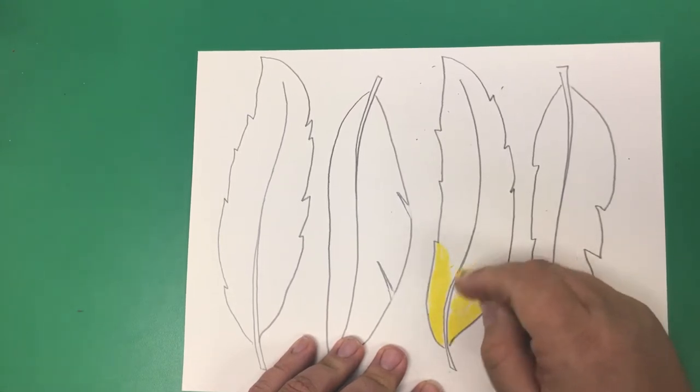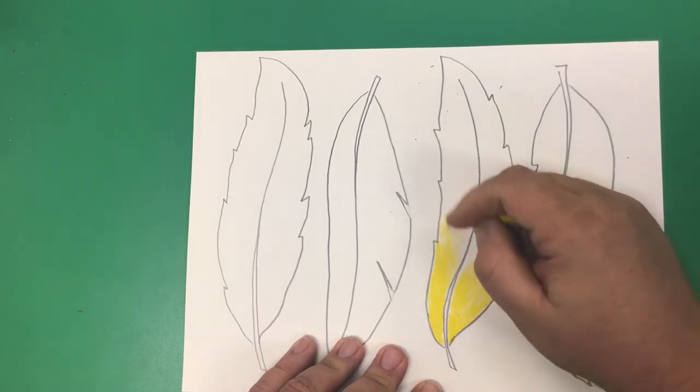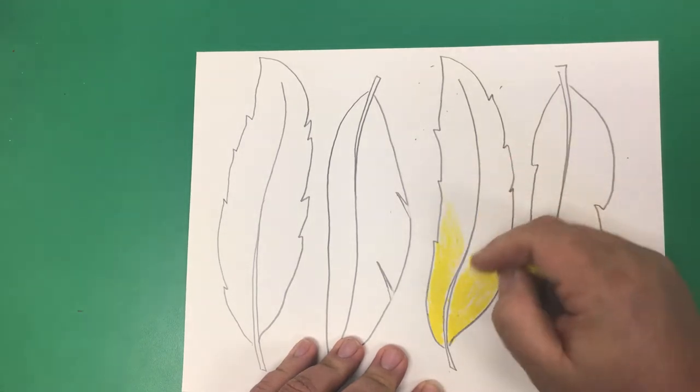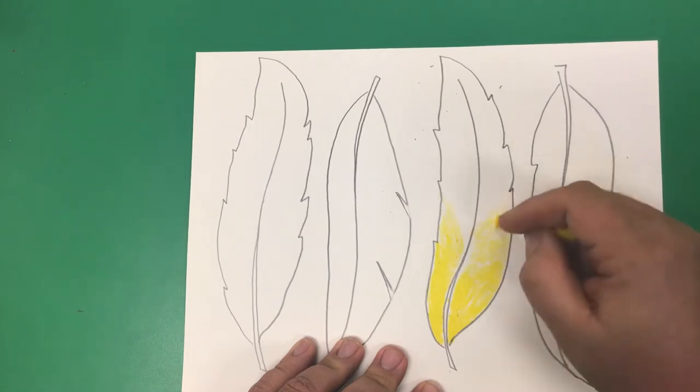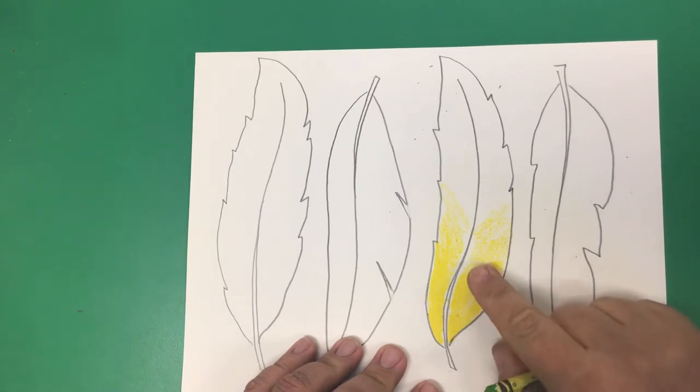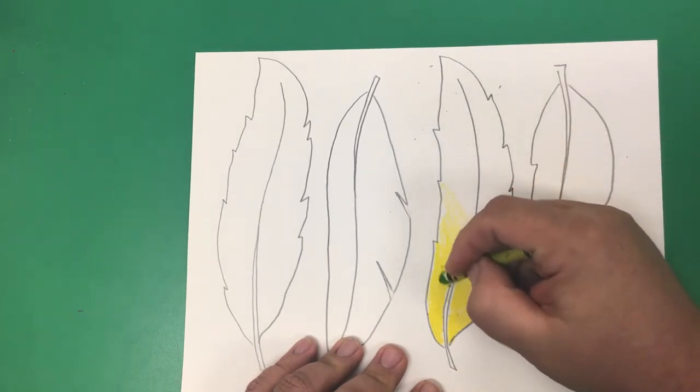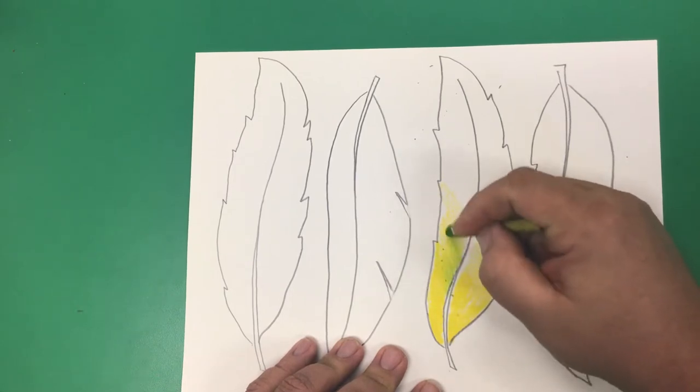Now, the thing with crayons are they are a wax-based art supply. And as you color on the paper, it builds up the wax. And the thing about wax is once you've built it up, it doesn't want anything else on top of it. So I push hard down here, and then I start getting a little bit lighter. That gives some paper showing through, which will allow my next color to show up better. I will start down a little bit farther on the picture, though. Just a couple little lines with my yellow green.